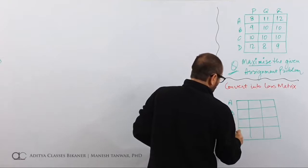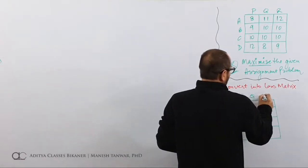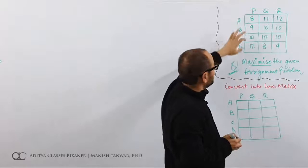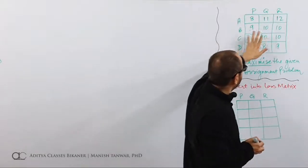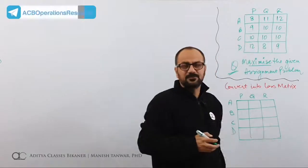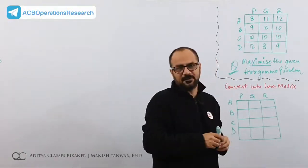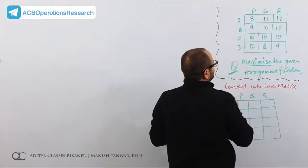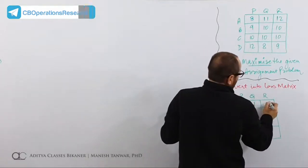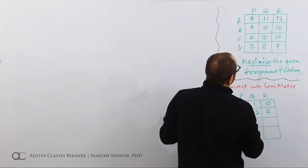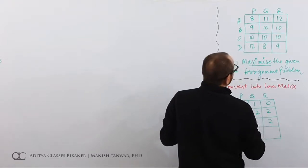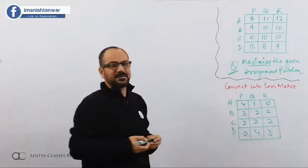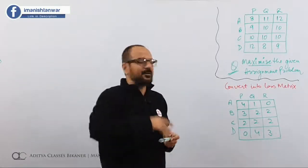The process is to subtract all cell values from the largest value among all cell values. The largest value is 12 — nobody beats 12. So I will subtract all values from 12. This is the process of converting the profit matrix into a loss matrix. So 12 minus 8 gives 4; then 1, 0, 2, 2 and 3; then 2, 2 and 2; and here we get 0, 4 and 3. Now I have converted the profit matrix into a loss matrix, and you can go ahead and minimize this assignment.